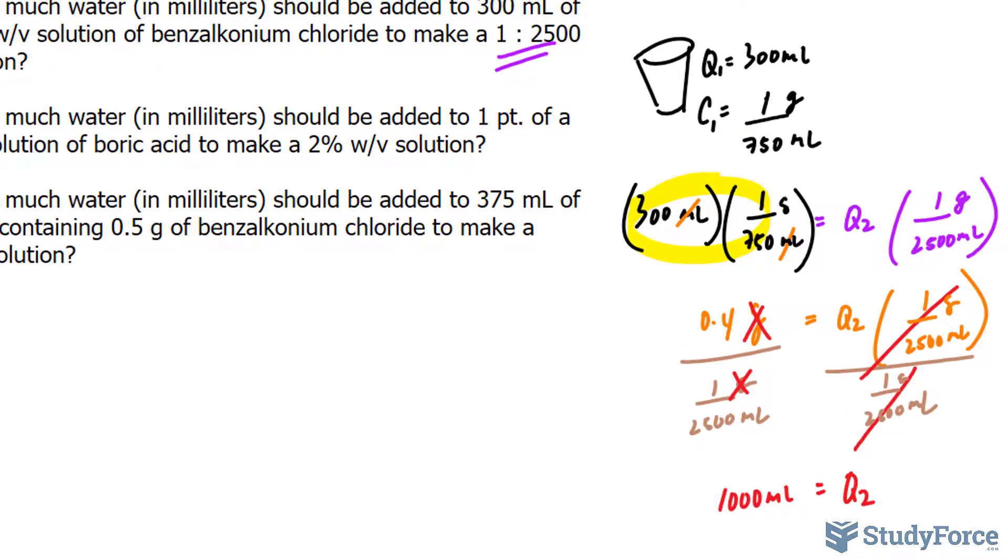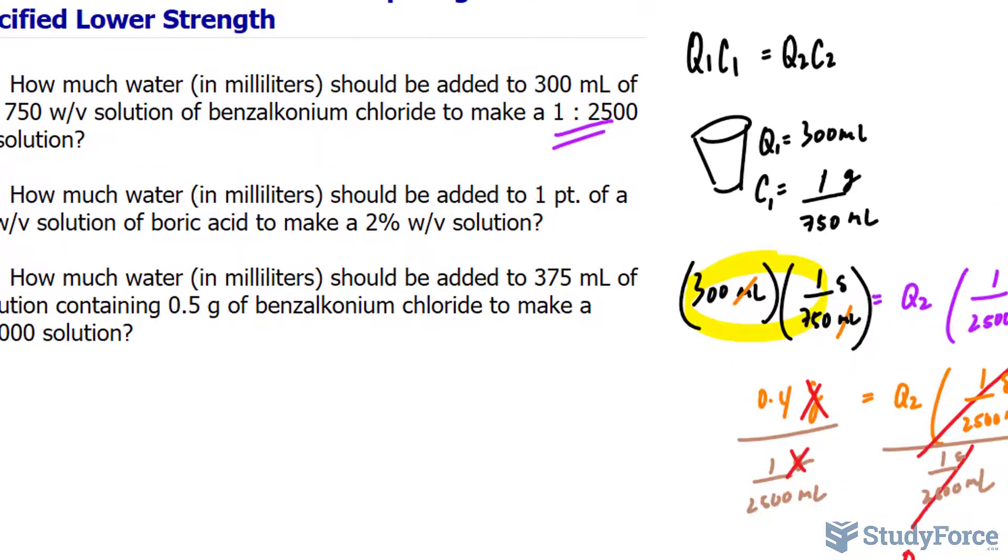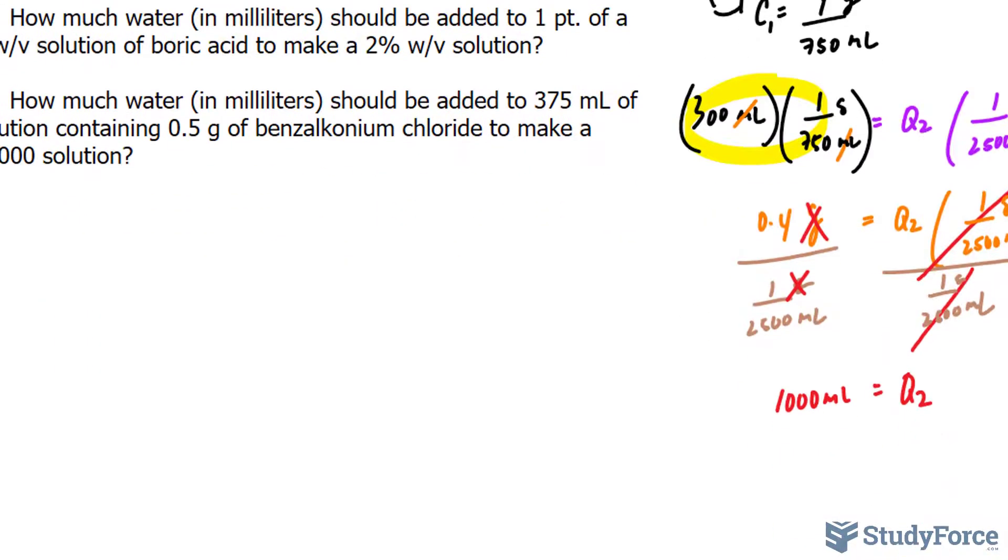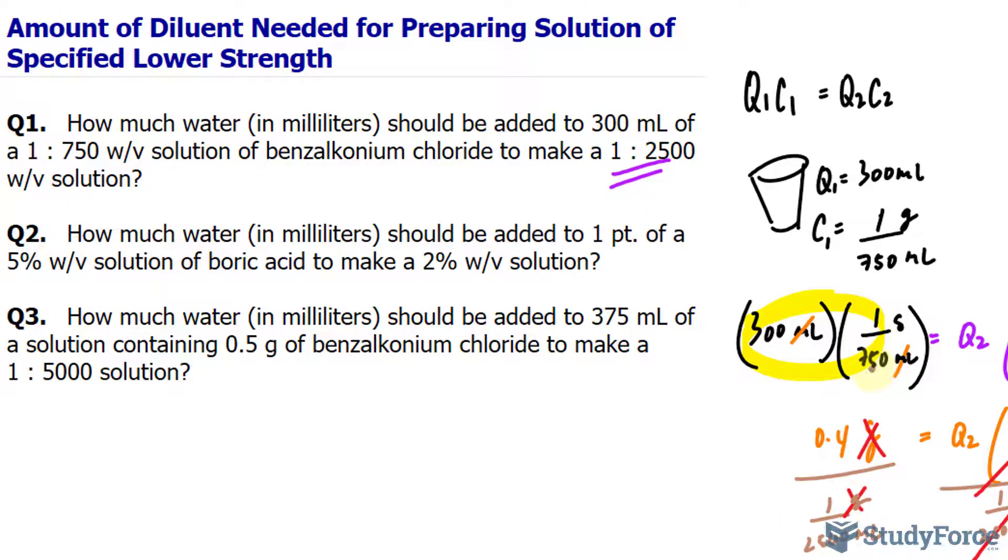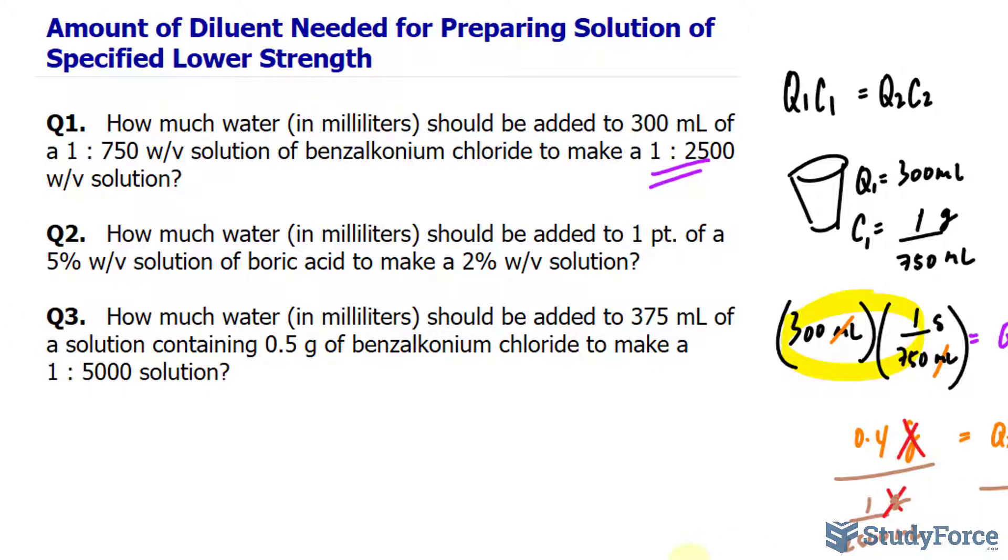From here we can actually find out how much water, water is our diluent here, that we need. So we're starting with 300 and we are going to 1000. That's a difference of 700 milliliters. So we need to add 700 milliliters to 300 milliliters so that its concentration goes from 1 to 750 over to 1 to 2500. Let's move on to question number two.